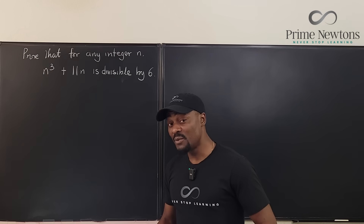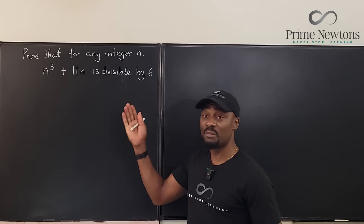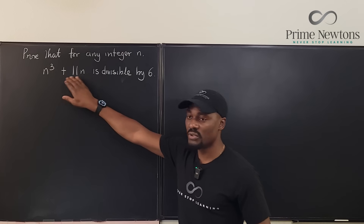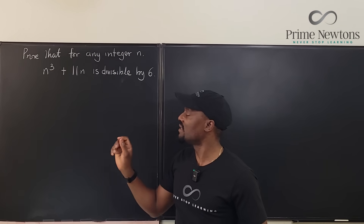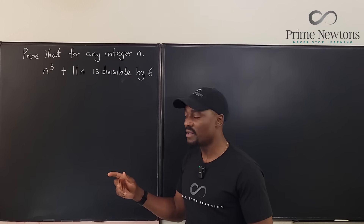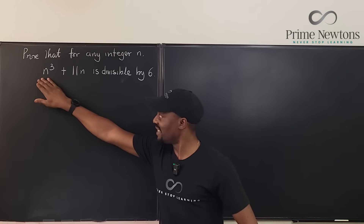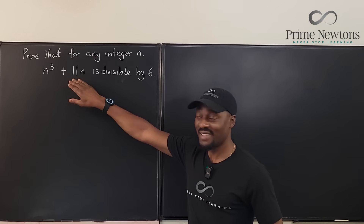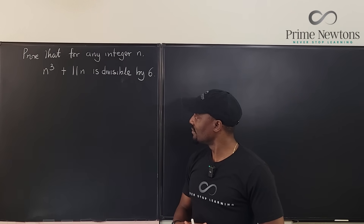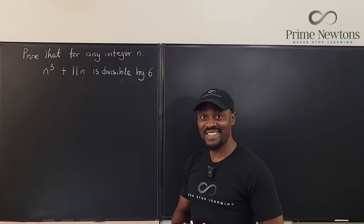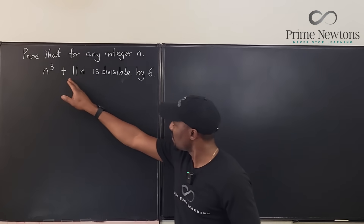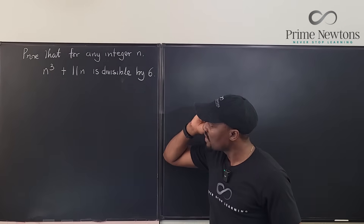Whenever we get a challenge like this — prove that something is divisible by a number — you just have to say: if I can show that this is a multiple of six, I have to be able to write this as equal to six times something, where that something is an integer. Then you're done. The problem is nothing in this expression contains six — that is obvious. We can't just generate six by working with these two terms.